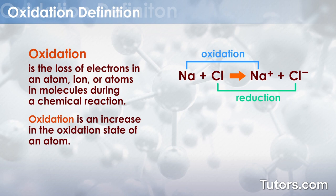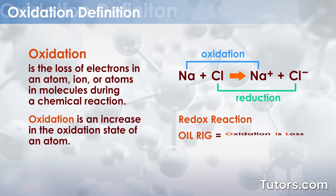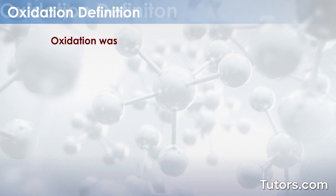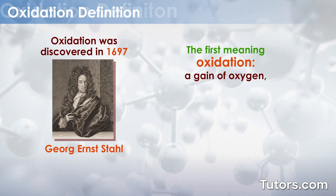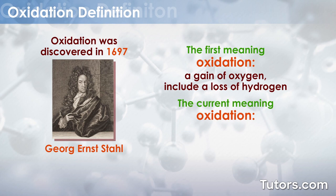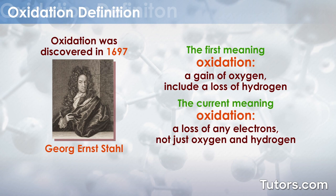Oxidation and reduction form a redox reaction that is remembered by the acronym OILRIG: oxidation is loss, reduction is gain. Oxidation was discovered in 1697 by chemist George Ernst Stahl and has evolved in meaning over time. The first meaning of oxidation was a gain of oxygen, then expanded to include a loss of hydrogen. The current meaning is broader, including a loss of any electrons, not just oxygen and hydrogen.